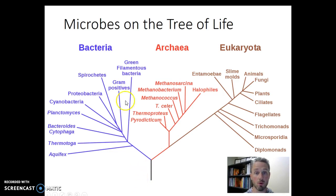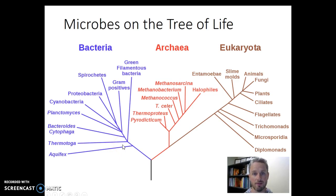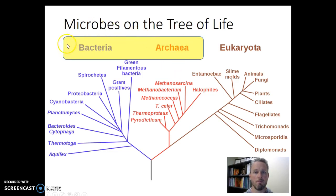So we're going to think about those four groups: bacteria, archaea, and the two kinds of eukaryotes that are microbial — the protists, which have lots of diversity, and then some of the fungus. The other important thing to point out as we look at this tree of life is what bacteria and archaea have in common: both are what we would call prokaryotes — two different kinds of cells that both lack a nucleus.